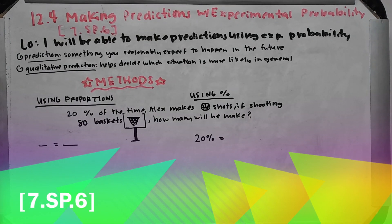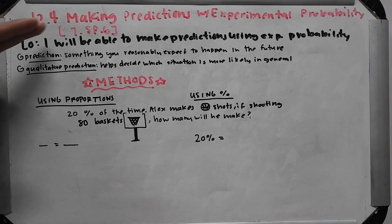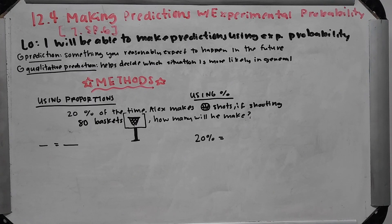Okay guys, so this is 12.4 Making Predictions with Experimental Probability Standard. Your objective is to be able to make predictions using experimental probability, again always with a percent accuracy or higher, given the independent practice.